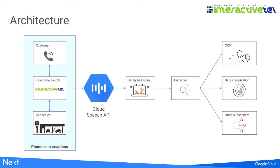Let's talk about the architecture we use. From our telephony infrastructure, we stream speech in real time to Google's Cloud Speech API. We take the results from Google and pass them through our analysis engine, which extracts sentiment, keywords, and key phrases — all of which are used to construct an understanding of what's happening on a call. We take our findings and publish them to CRM companies, data visualization tools, and other subscribers who pass it along to managers who can intervene if necessary.